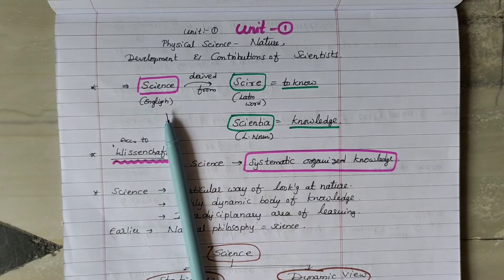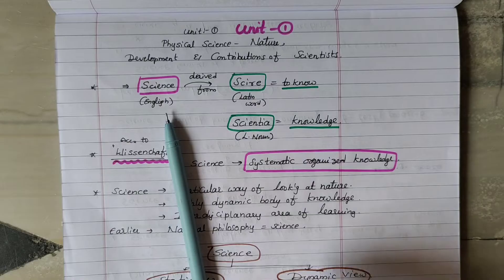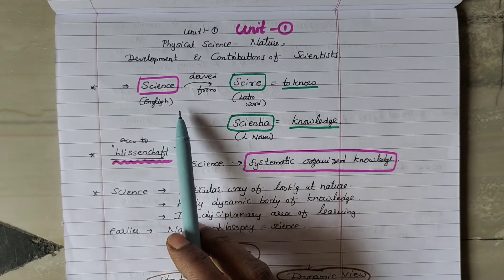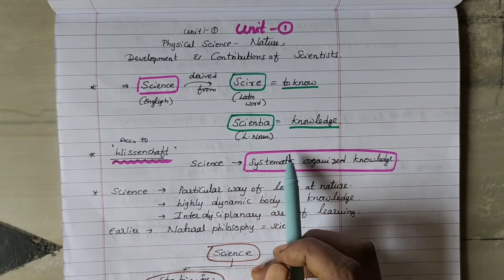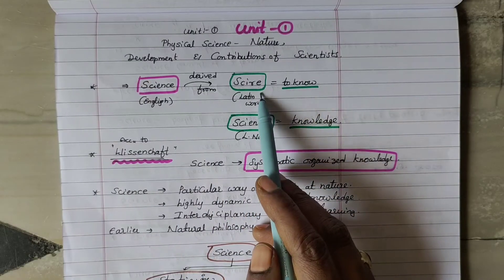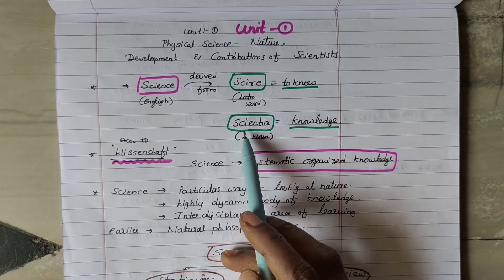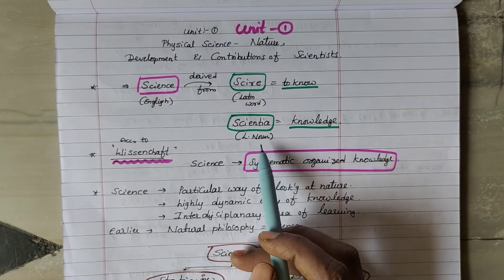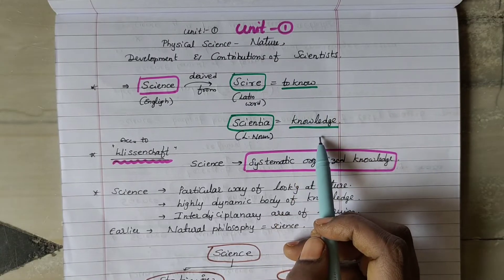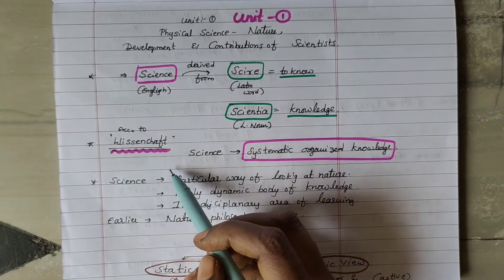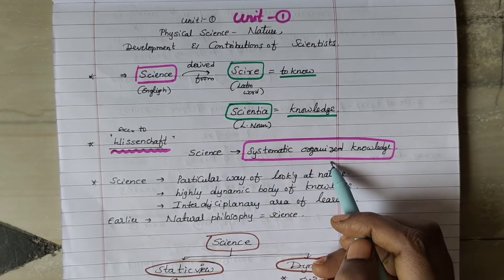We need to start looking at the first definition. Science is actually the English word. It is derived from 'Syrie' and 'Scientia.' Syrie is a Latin word meaning 'to know.' Scientia is a Latin noun also meaning 'to know,' so the example meaning is knowledge. According to the vision chief, science is systematic, organized knowledge.